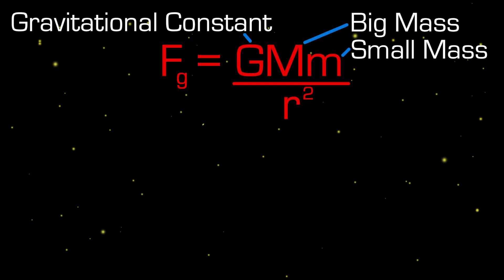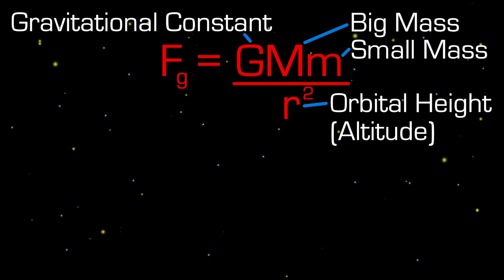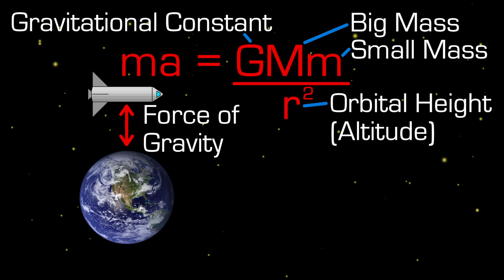Small m is the mass of the rocket, and r is the distance between the rocket and the center of the Earth, not the surface. The definition of a force is a mass multiplied by its acceleration. So the force of gravity on the rocket is the rocket's mass times its acceleration. Gravity is pulling only in the vertical direction, and just like velocity, acceleration is a vector with horizontal and vertical components.